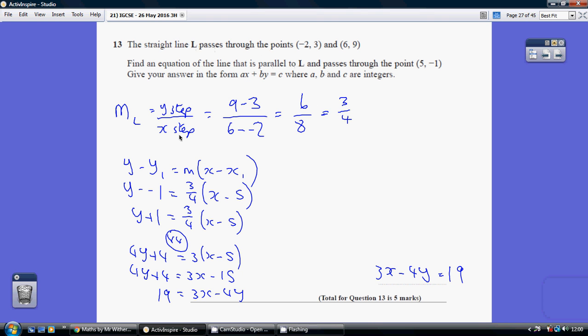The gradient is y step divided by x step. If I take away the y coordinates, 9 minus 3 as the numerator, and the denominator is going to be 6 minus minus 2. 9 minus 3 is 6. 6 minus minus 2 is 6 plus 2, which is 8, simplifying to 3 quarters.